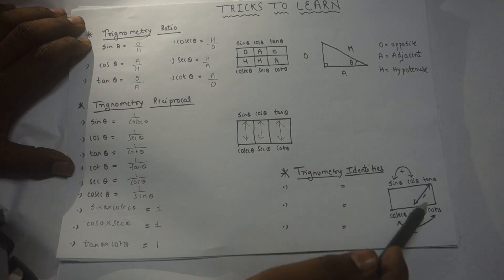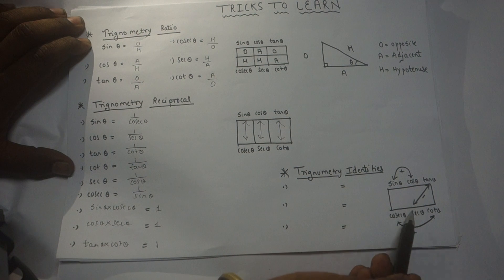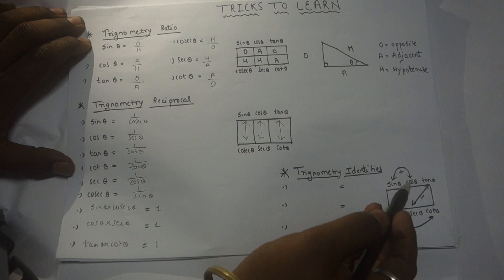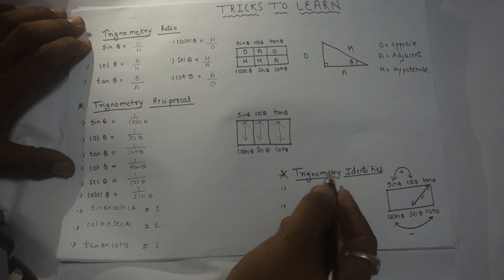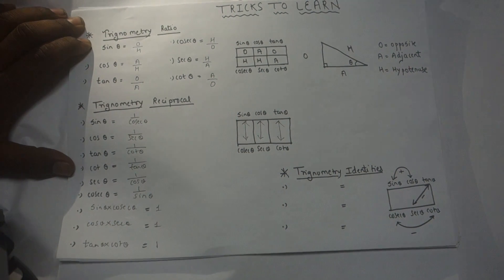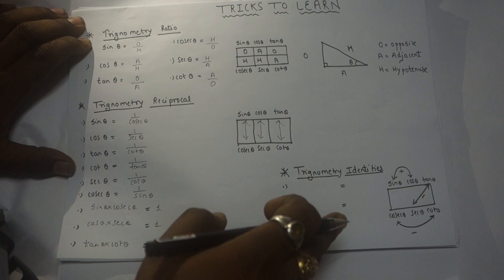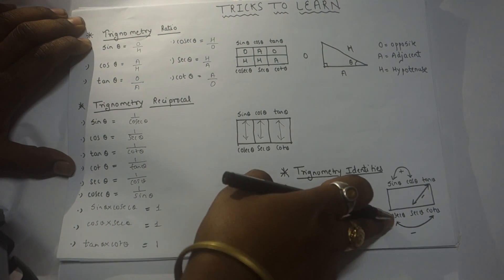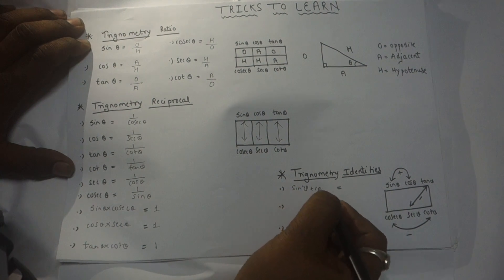Now move on to the last one — trigonometric identities. There is a relation between sin and cos, sec and tan, and cosec and cot. Sin and cos are close together, so we use a plus sign. Sec and tan are far apart, so we use a minus sign. Cosec and cot are also far apart, so minus again. The first identity: since sin and cos are close, sine squared theta plus cos squared theta equals one.